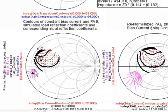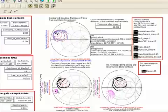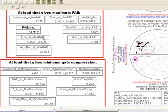These lines are the input reflection coefficient as the load is varied. The boxes to the left show, for example, what the maximum PAE load is, what that value is, and what the corresponding other performances are. As well as this box here, which shows the minimum gain compression point.